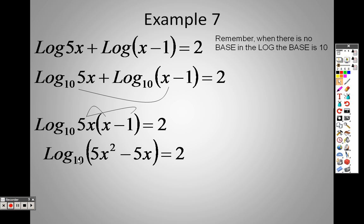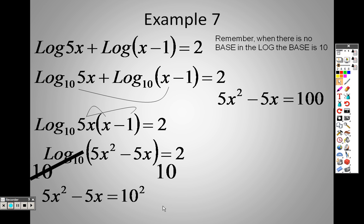Now, just like the last problem, whatever that base is, which is 10, I can basically put this all to the 10th power on this side and this side. So 10 to the log base 10 cancels out. So all I have left on this side is 5x squared minus 5x, and 10 squared on the other side. Well, 10 squared is 100.